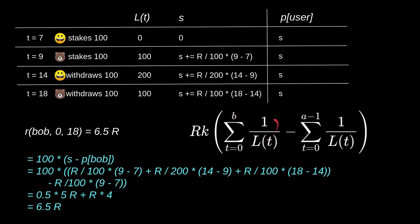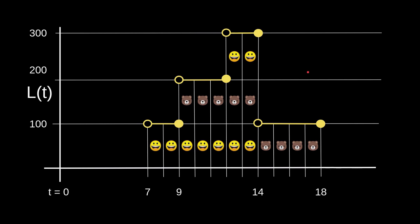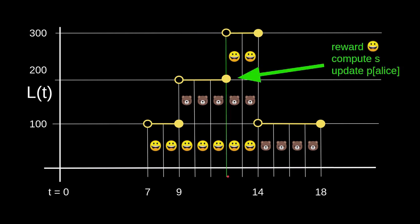So that's an example of how storing one variable to track the global sum and using a mapping to store a value per user allows us to efficiently calculate each user's reward. We've only seen a simple example, but if Alice decides to stake more, we can make a simple modification: when Alice's staking balance changes, we calculate her reward up to that point, then set `p(alice)` to the current value of `s`. That is essentially how the staking reward contract algorithm works. In the next video, we will actually code the contract.